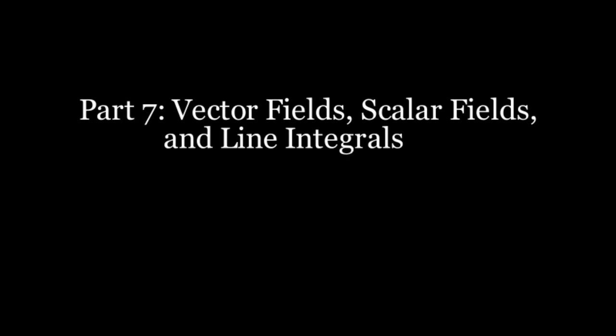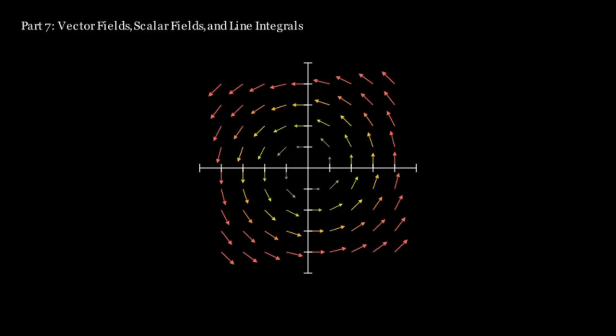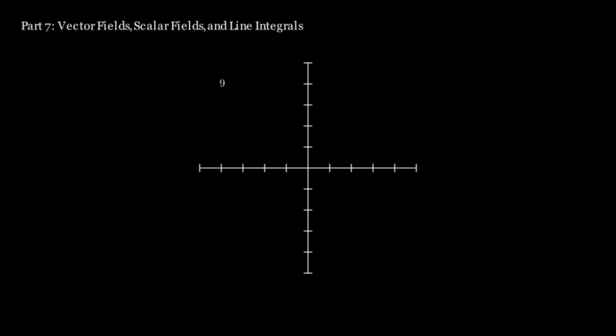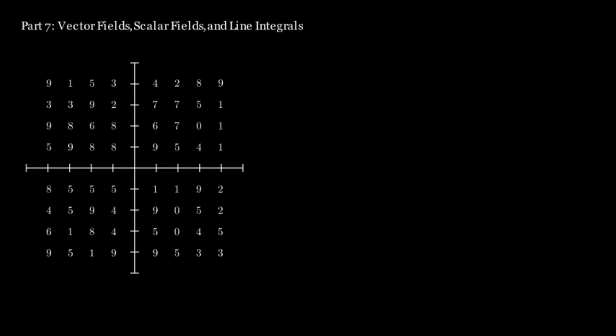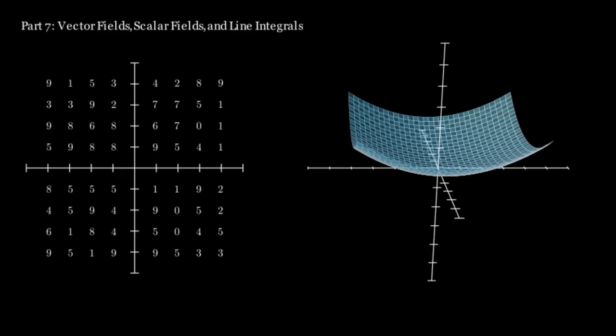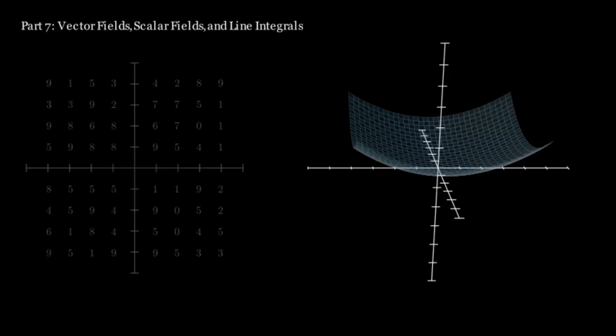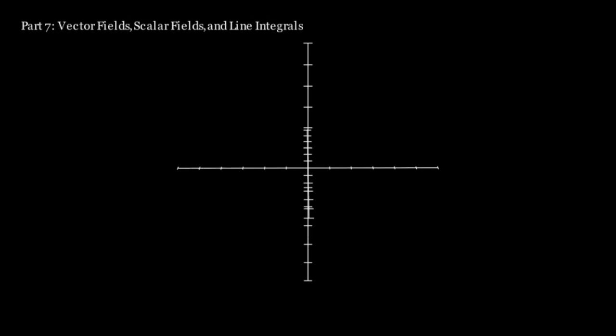Part 7: Vector Fields, Scalar Fields, and Line Integrals. A vector field is an assignment of a vector to each point in a plane or space. A scalar field is essentially that, but with regular numbers, a.k.a. scalars. Think of these as 3D surfaces above a 2D plane. In a way, they're essentially the same thing as 3D functions.